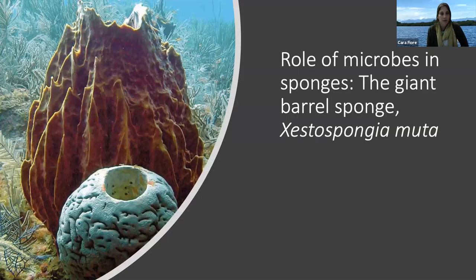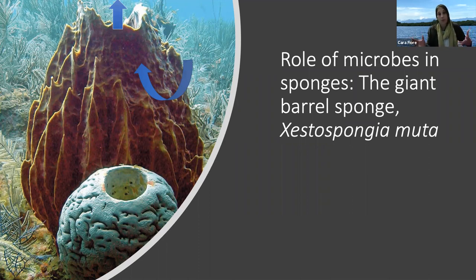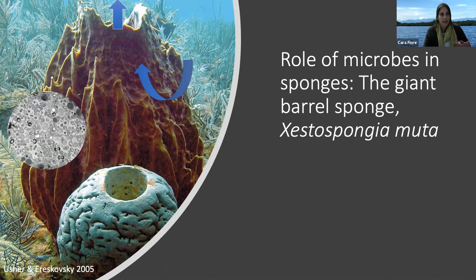I'll start with a little background on myself and on sponges in general. During my doctoral work at the University of New Hampshire, I focused largely on the giant barrel sponge, Zestospongia muta. Sponges in general have a relatively simple body plan — they draw water in through pores on the outside of their body, process it out through a central osculum or multiple oscula, and in this process they're able to filter bacteria and other particulates out for food. Sponges are also known to host dense and diverse communities of microbes, as Michelle mentioned.